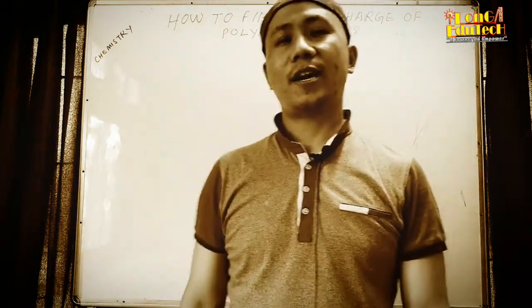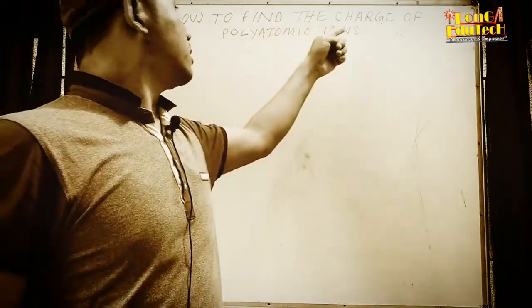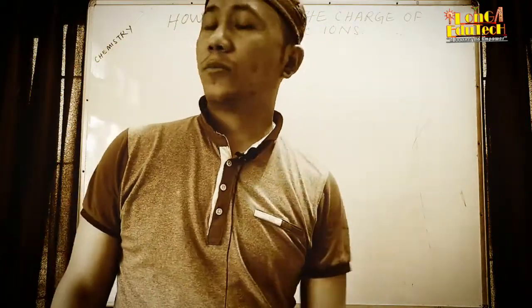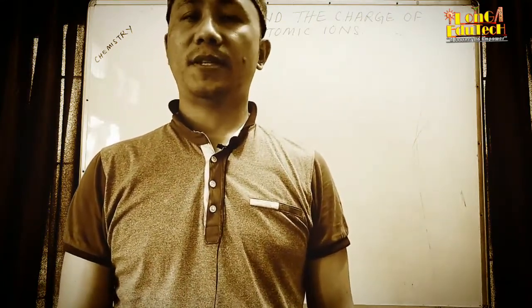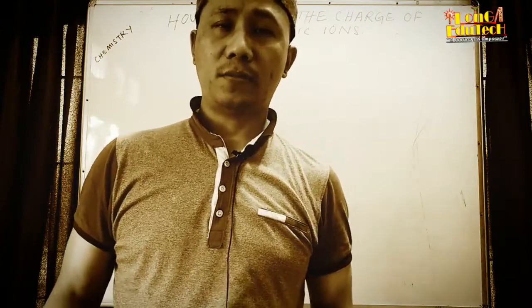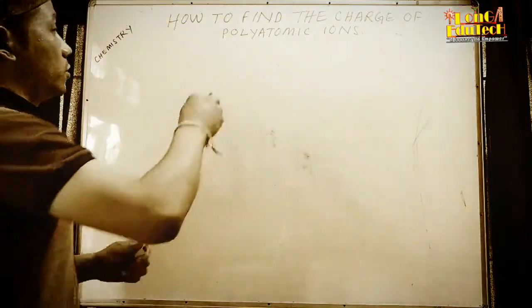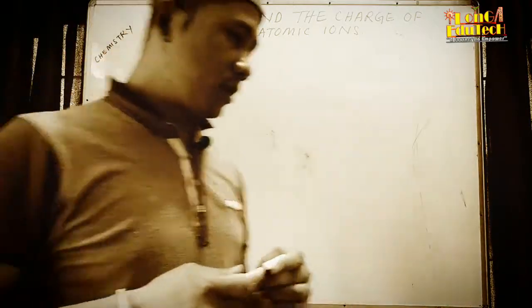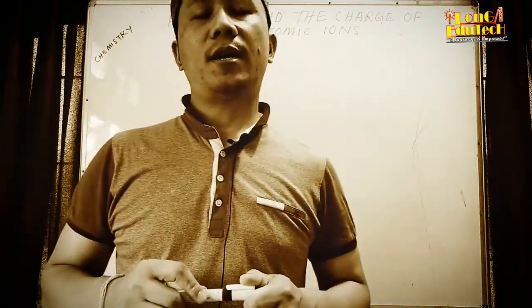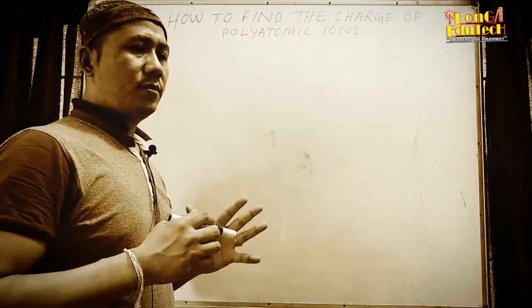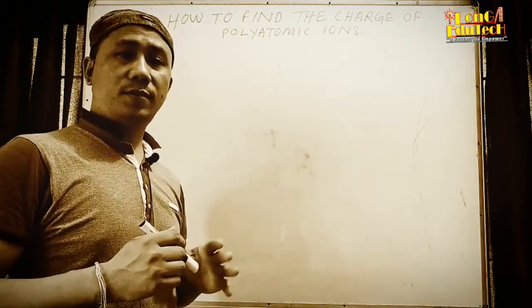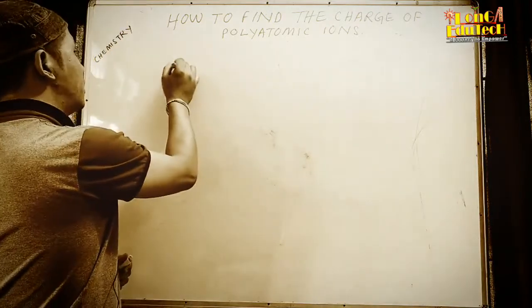Hello students, welcome to Longitude Tech. Today we will discuss how to find out the charge of polyatomic ions — ions like sulfate SO4²⁻, carbonate CO3²⁻, phosphate PO4³⁻, and others. Instead of always memorizing them, it's better to understand how these charges arise.